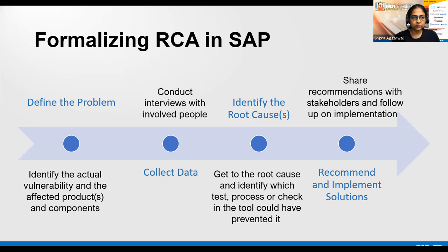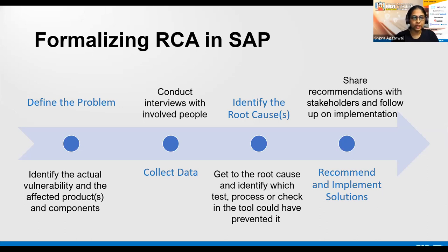We started with the five-step RCA process, which is generally available, and adopted it to a four-step process. The first step is defining the problem. At every patch day, we look at all the vulnerabilities we have fixed and try to identify vulnerabilities based on different criteria that we want to analyze. Once we have identified those vulnerabilities, we start gathering facts and information by looking at the incidents, the security patches, the affected products and components, and who were the people involved in this particular fix.